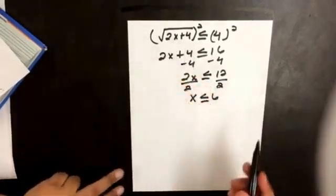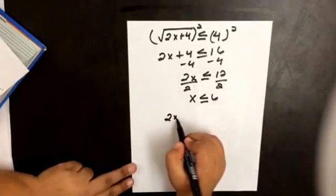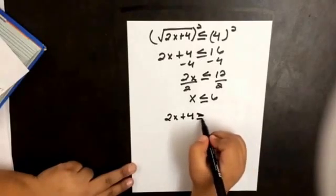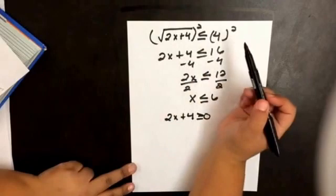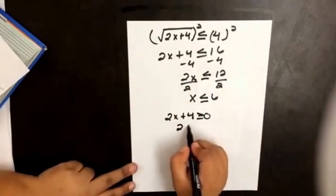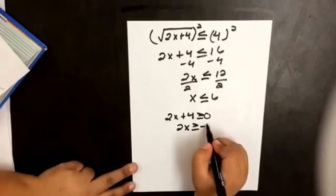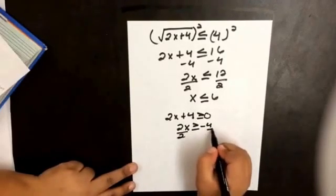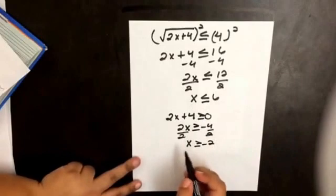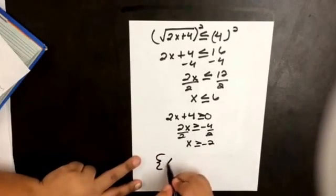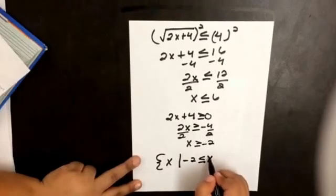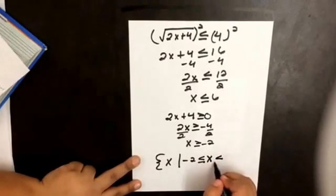Now we want to consider what's inside the radical. Since it's the square root, our radicand must be non-negative, so 2x plus 4 is greater than or equal to 0. Then 2x is greater than or equal to negative 4, so x is greater than or equal to negative 2. So our solutions are the set of all x such that x is greater than or equal to negative 2 and less than or equal to 6.